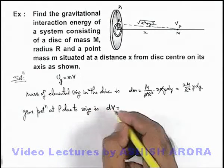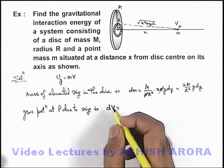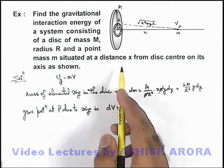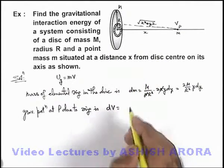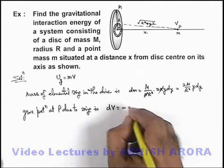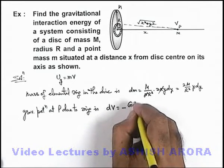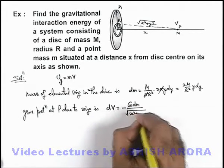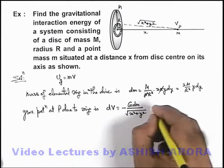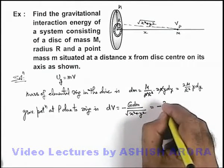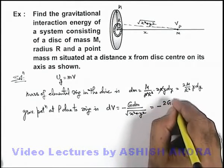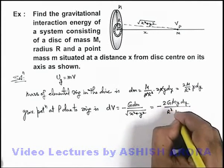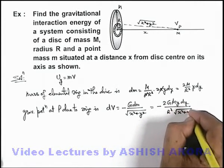We already discussed the expression for gravitational potential due to a ring at an axial point. So dV can be written as minus G dm divided by √(x² + y²). Substituting the value of dm, this becomes minus 2GM times y dy divided by R² times √(x² + y²).